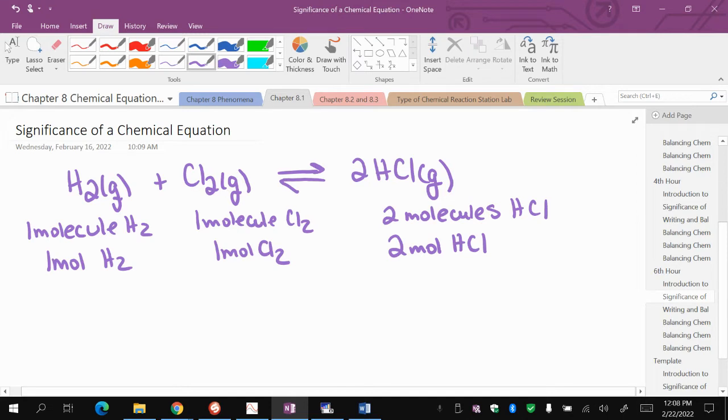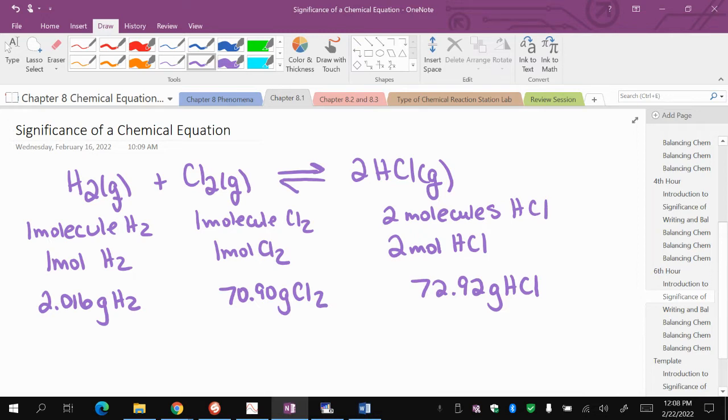The coefficients in the front tell us how many moles we have. We could also talk about this in terms of mass. We would have 2.016 grams of hydrogen, 70.90 grams of chlorine, and 72.92 grams of HCl. If you notice, the total mass of the reactants equals the total mass of the products.